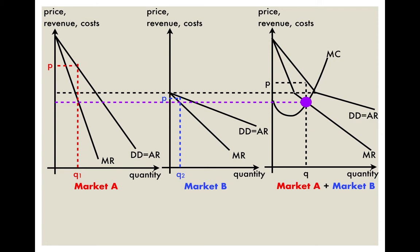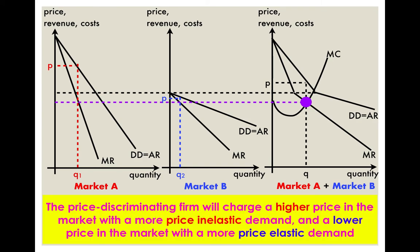In market B, doing the same exercise gives a profit-maximizing quantity of Q2 with price P2. When the firm conducts third-degree price discrimination, it charges a higher price in market A (the more price inelastic market) and a lower price in market B. This makes sense: for customers with more price inelastic demand, even if the firm charges a higher price, quantity demanded falls less than proportionately. For customers with more price elastic demand, lowering prices increases quantity demanded more than proportionately.